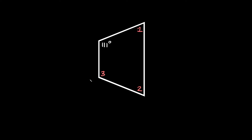Here's our next problem. We're solving for these three angles and we're given that this angle is 111 degrees. As you can see, this trapezoid is now basically on its side, but that doesn't change anything — everything still applies. Starting with the base angles: this obtuse angle is equal to this obtuse angle, and this acute angle is equal to this acute angle.